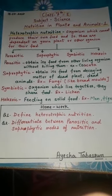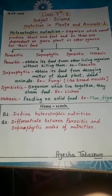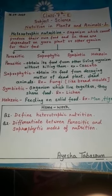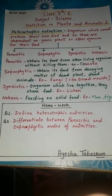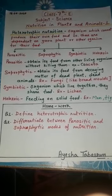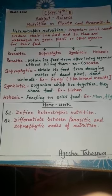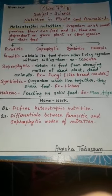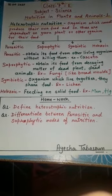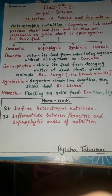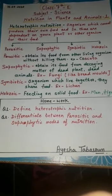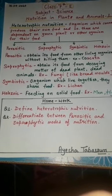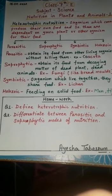The first point is parasitic nutrition. Parasites feed on other living organisms without killing them. It means parasites get their food by living inside the body of another living organism without killing them. For example, Cuscuta.